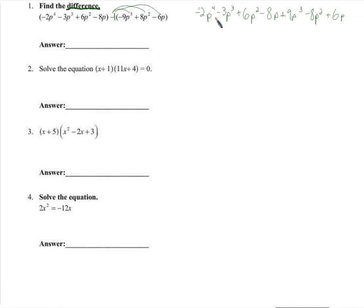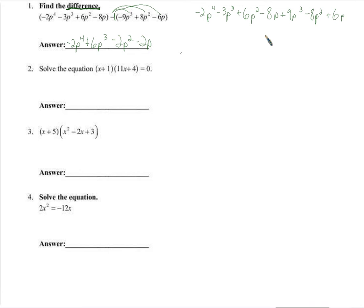Now I just collect like terms. I have only one p to the fourth term, so that stays. For the p cubed terms: negative 3 and positive 9 gives a positive 6p cubed. For the p squared: there's a negative 8, so that's negative 8 — wait, 6 minus 8 gives negative 2p squared. For p: we've got negative 2p. We have no constants, so that's it.